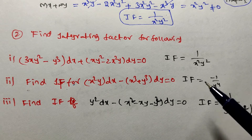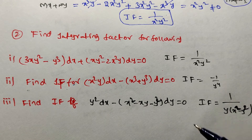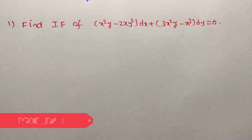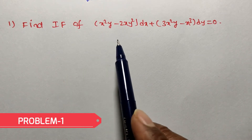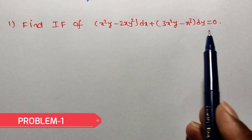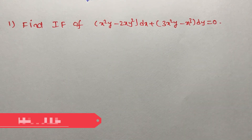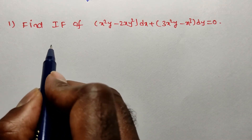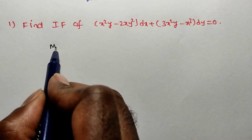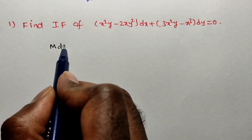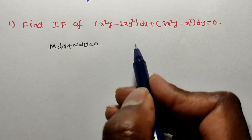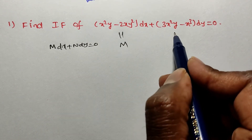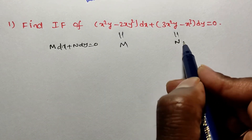So first, please take a screenshot and try to solve after watching this video. Here the given problem is: find the integrating factor of M dx plus N dy equals 0. You observe the given problem is in the form of M dx plus N dy equals 0. So this is M and this is N.